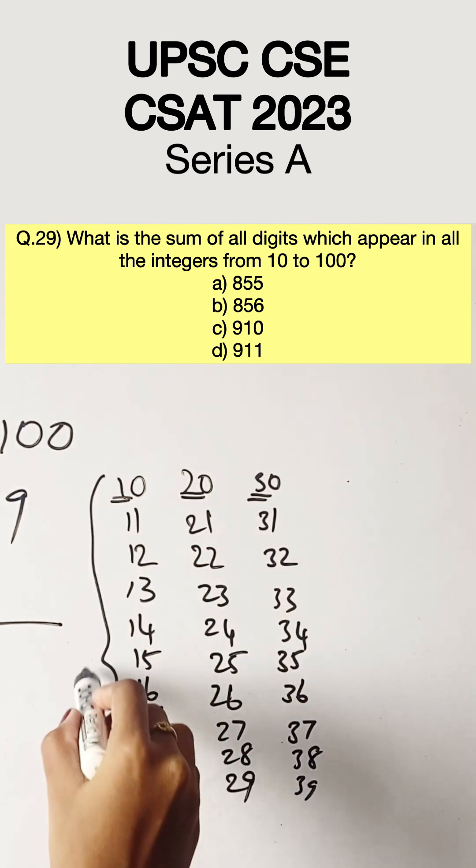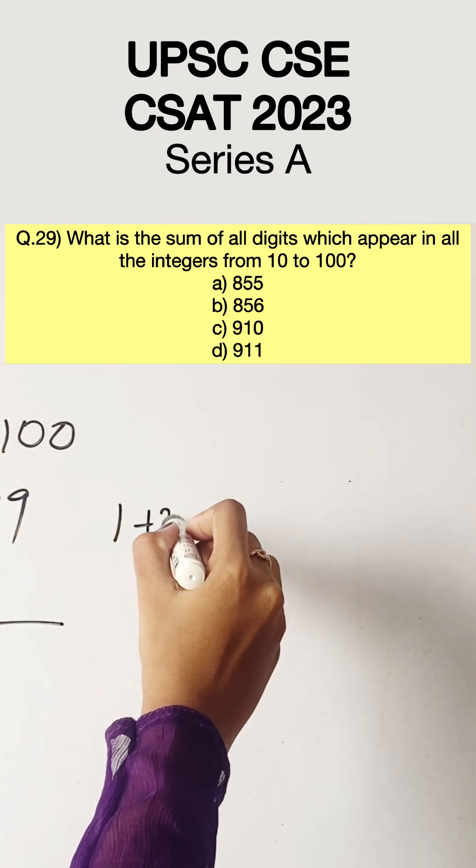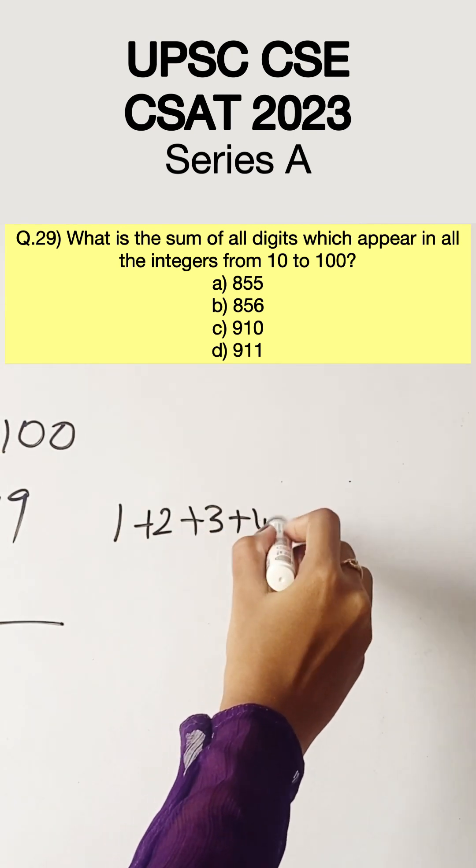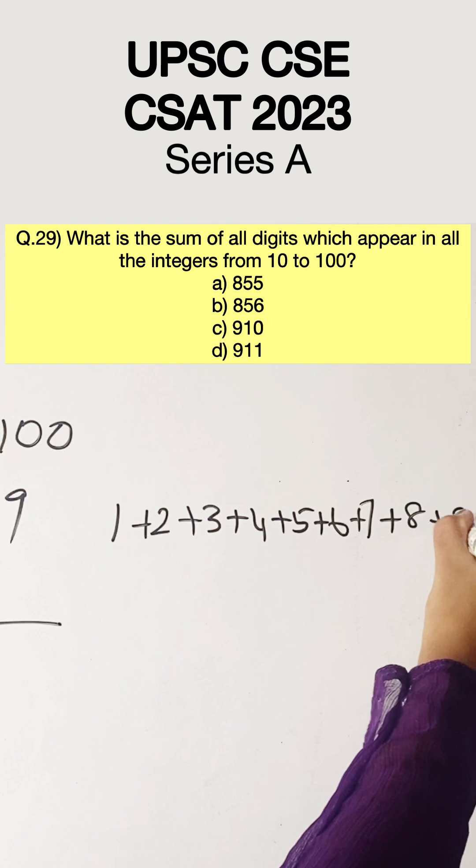Therefore, we have to add 1 to 9 and multiply it by 10 because each number is going to repeat itself for 10 times in the series 10 to 99.